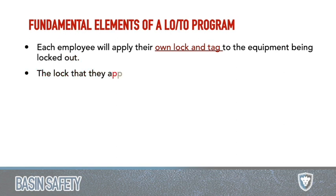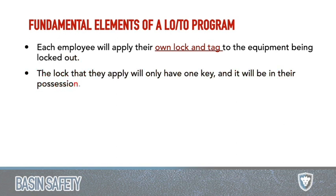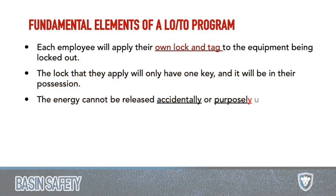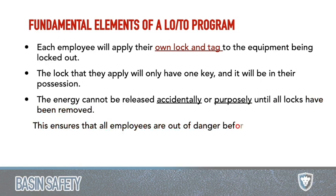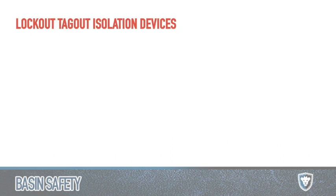The main components of a lockout tagout program: each employee will apply their own lock and their own tag to the equipment being locked down. Tags can sometimes be used for multiple locks — for example, if you have a multi-lock hasp with ten different locks, one tag can be used as long as each lock is identified. The lock that's applied will only have one key in the employee's possession. Energy cannot be released until all locks have been removed, ensuring all employees are out of danger.